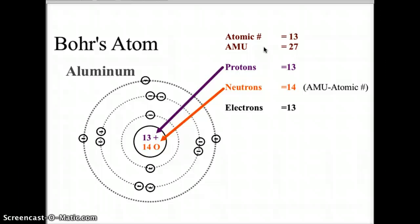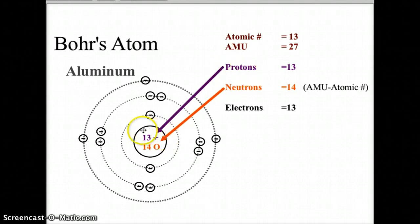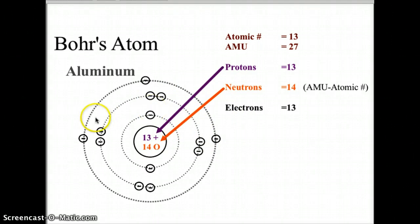The mass of the atom is created by the protons and the neutrons, and therefore with 13 protons, we need 14 neutrons to create the AMU of 27. Since this is a neutral atom, we're going to have 13 electrons to balance out the 13 protons, where negative and positive charges balance. The neutrons and protons are found in the nucleus, and the electrons will be arranged in levels in the orbitals around that nucleus.